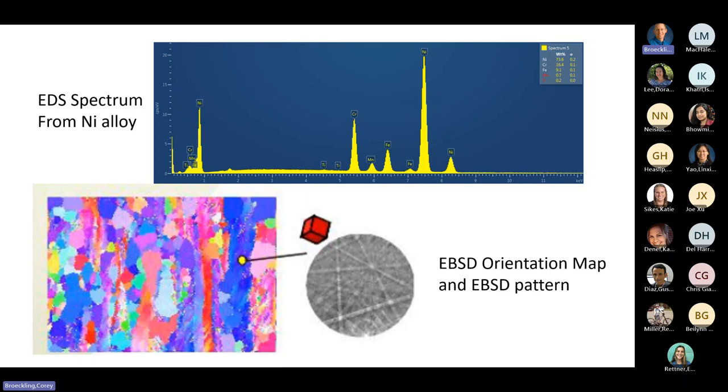The bottom slide here shows the EBSD and the mapping of the sample. We can scan a sample, and it actually, pixel by pixel, creates a diffraction pattern. That is automatically indexed to what the orientation is. And so you actually get an orientation map and a whole bunch of other things you can get from samples.